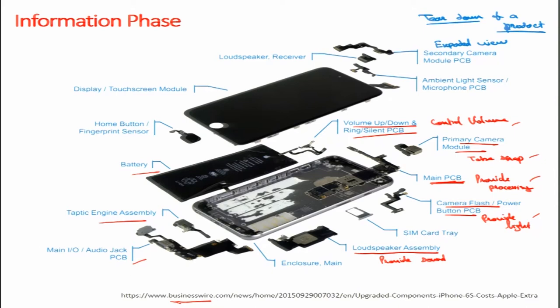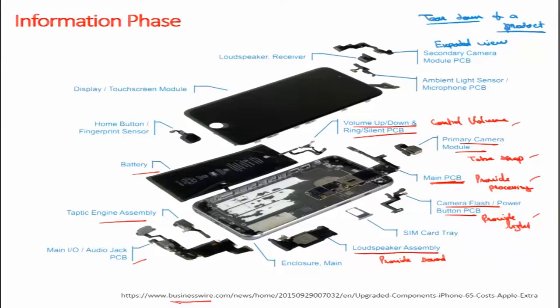I will come to the function phase and explain why these two words are critical. This is the information phase — we can tear down the whole product into components and see various components. In the function phase, we will try to identify the functions.